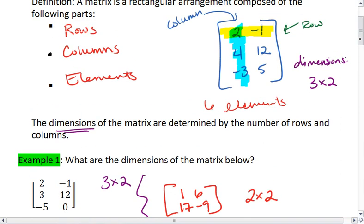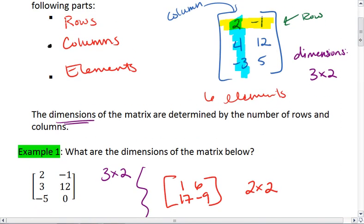Well, that's the basics of a matrix. We have rows, we have columns, we have elements, and then we can give the dimensions of a matrix.